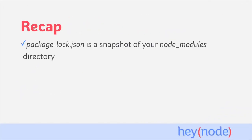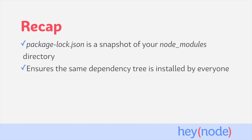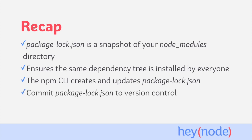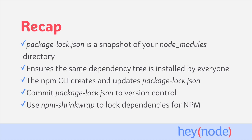To recap: package-lock.json is a snapshot of your node_modules directory which records the versions of dependencies and their sub-dependencies used in your project, making up the dependency tree. Using a package-lock file ensures the same dependency tree is installed by everyone who runs your application. package-lock.json is created when running npm install and is updated by the npm CLI whenever your dependency tree changes. You should commit your package-lock file into version control to make sure it is distributed with your project, and use npm shrinkwrap when you want to lock dependencies for packages you publish to npm.